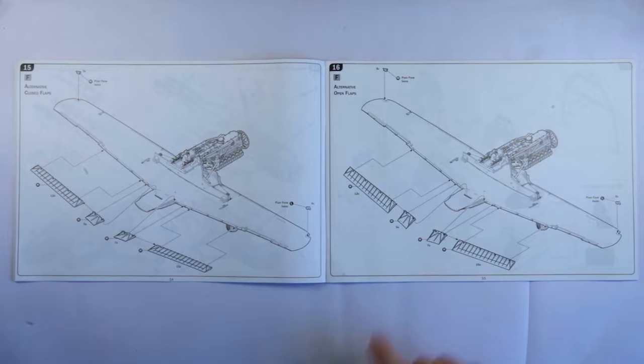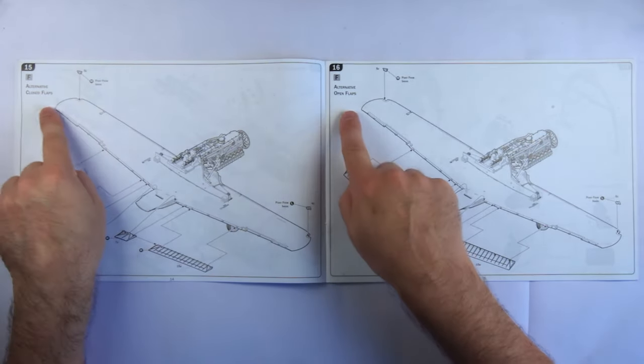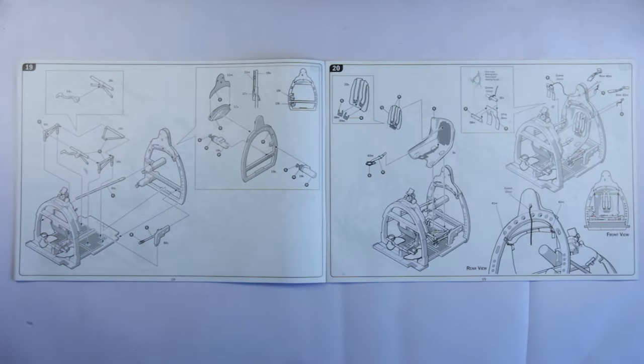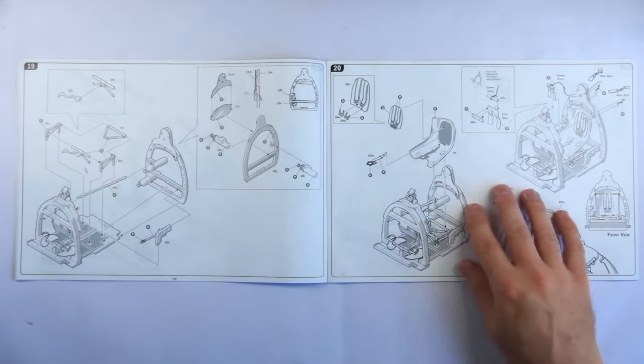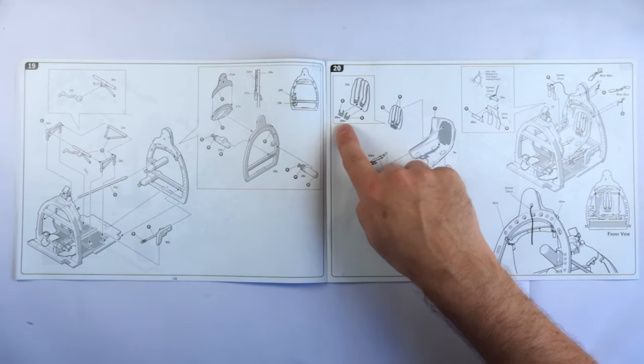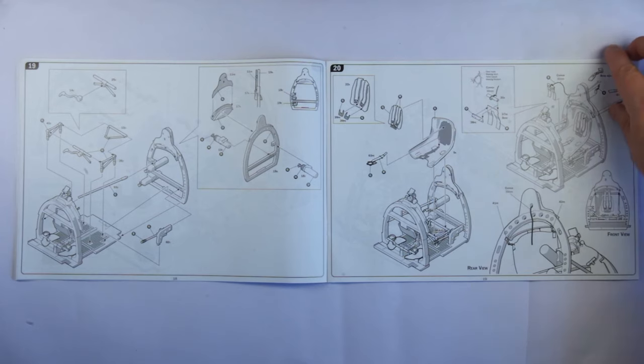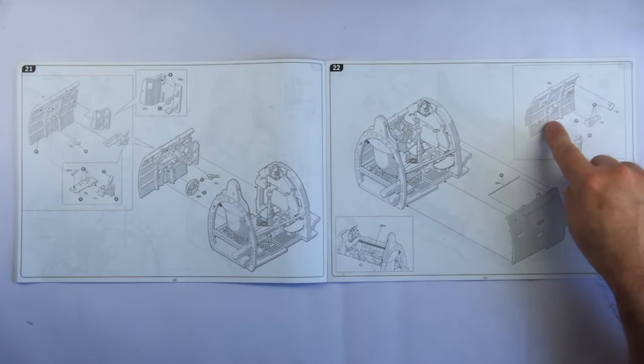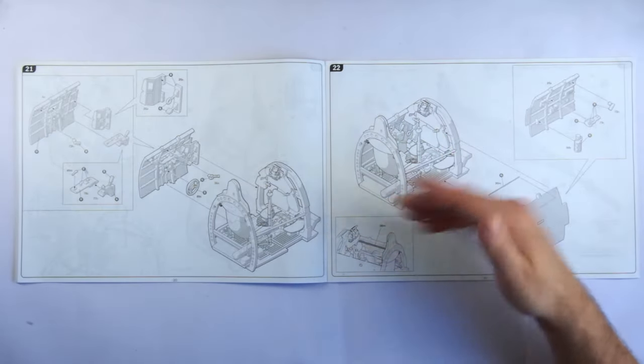Here we see the option for having flaps up or down. Cockpit instructions for the included decals. The cockpit instructions show a very comprehensively detailed assembly, with photo-etched parts called out clearly when needed. Interestingly, Italeri have approached the cockpit build in a similar manner to Airfix with the 1:24 scale Spitfire.